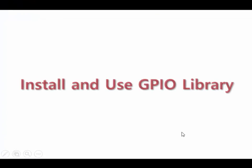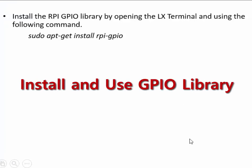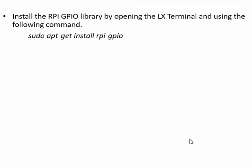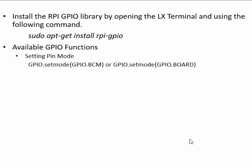Now I will explain the RPi GPIO library and the program used to control the LEDs. By default the GPIO library is pre-installed with the OS, but if it is not installed you can use the command 'sudo apt-get install python-rpi.gpio' to install the library.